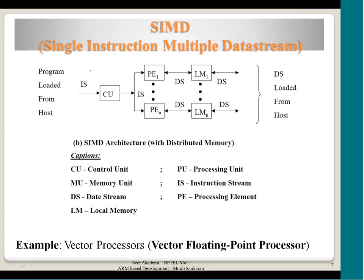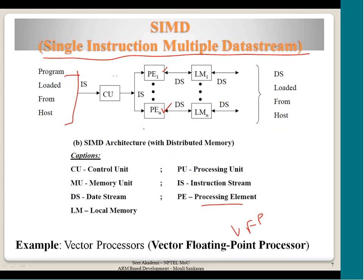Now SIMD — which is where vector floating point processors fall — the instruction stream coming from memory is fed to multiple processing elements. There are n processing elements and all of them get the same instruction stream, but they get different data streams — they happen to work on different sets of data. Though shown as different memory blocks, they can all be kept in a single physical memory. The key point is they all get the same instruction but different data.